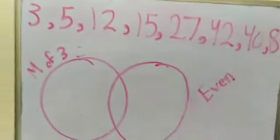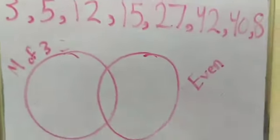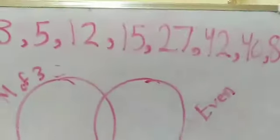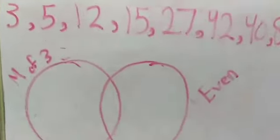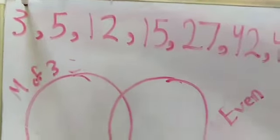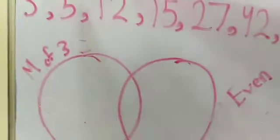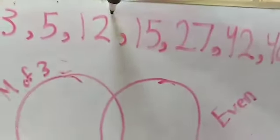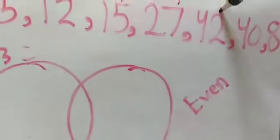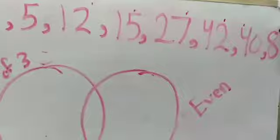On page 149, we have this example. We have this set of numbers, and we are going to sort them in a Venn diagram as multiples of 3 and even numbers. Let's find out what numbers are multiples of 3. Multiples of 3 are: 3, 6, 9, 12, 15, and so on. So 5 is not a multiple of 3. 12, 15, 27, and 42 are all multiples of 3, while 40 and 8 are not multiples of 3.